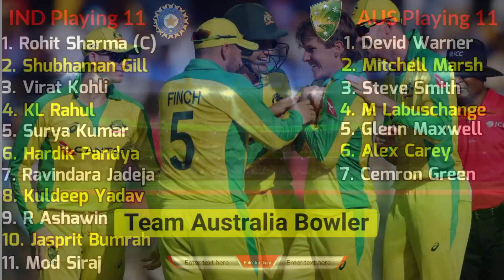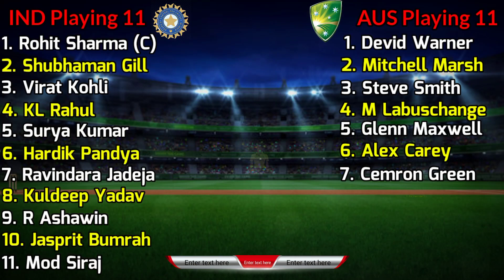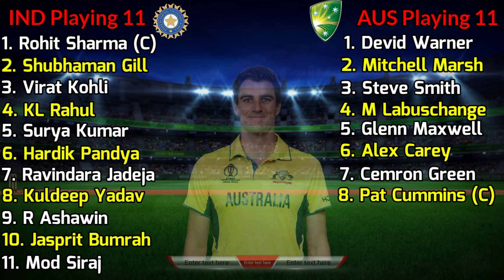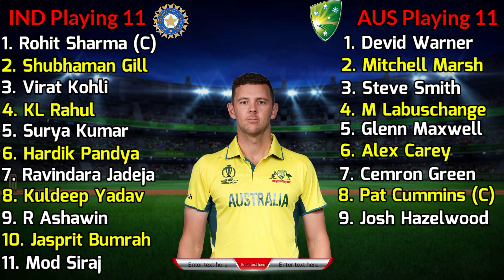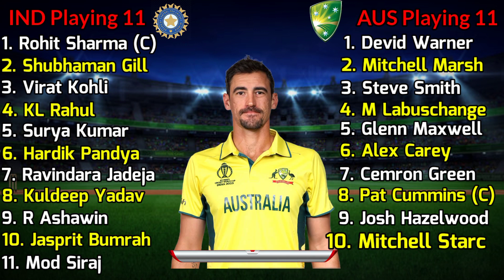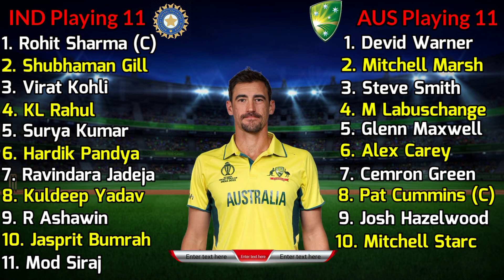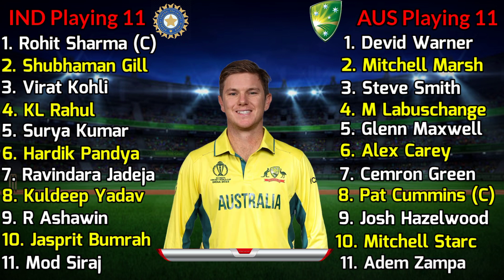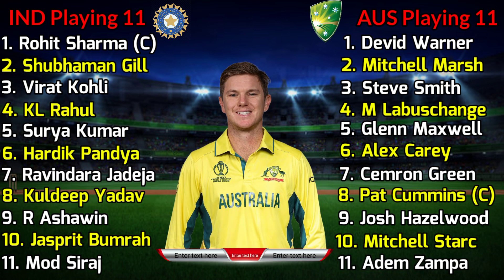Team Australia Bowlers. No. 8 Pat Cummins, Right Hand Fast Bowler. No. 9 Josh Hazlewood, Right Hand Fast Bowler. No. 10 Mitchell Starc, Left Arm Fast Bowler. No. 11 Adam Zampa, Right Hand Spinner.